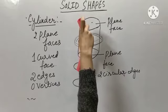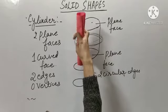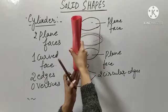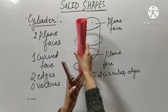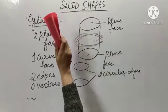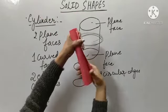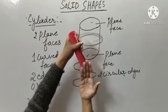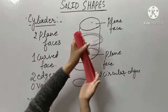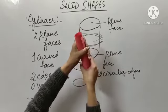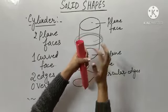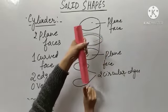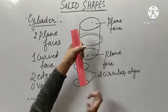This top one I can touch, so this is my plane face. Same way, the bottom also I can touch, so this is also my plane face. And this is my curved face. These are the two edges — one edge is this one, and the second edge is this one. And it has zero vertex.